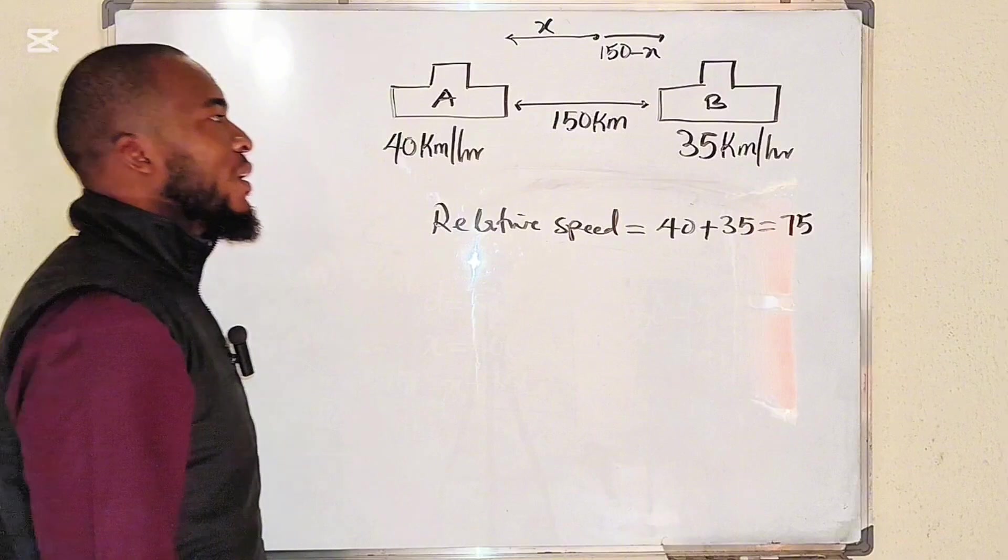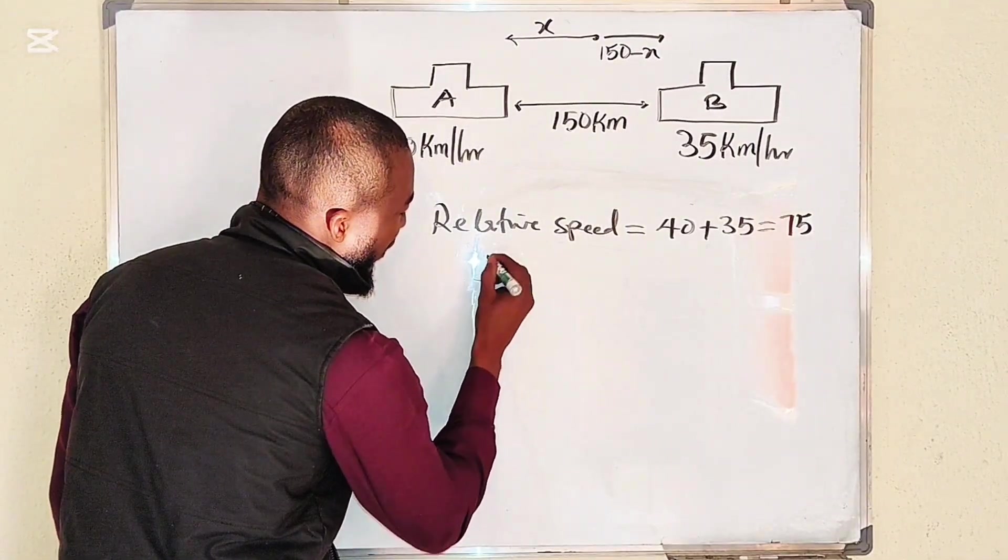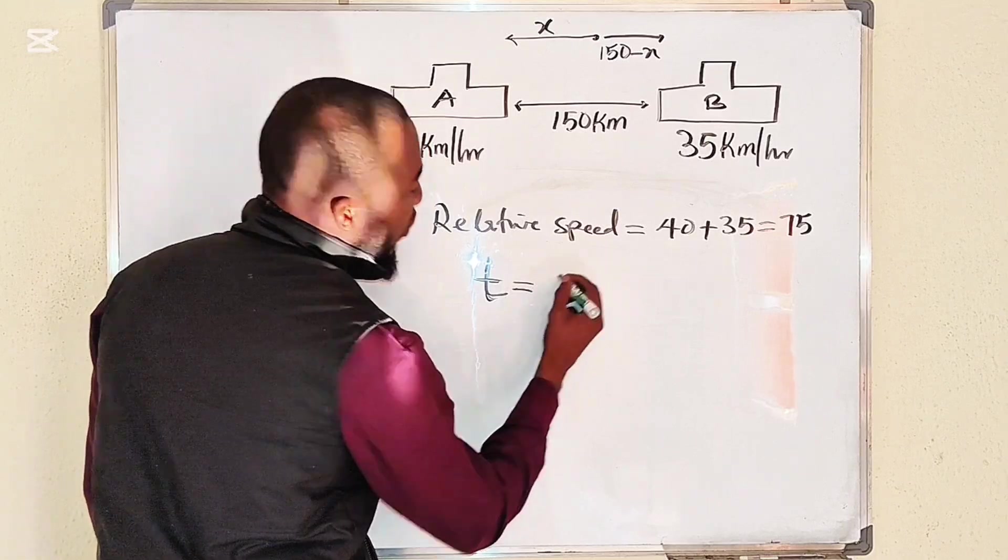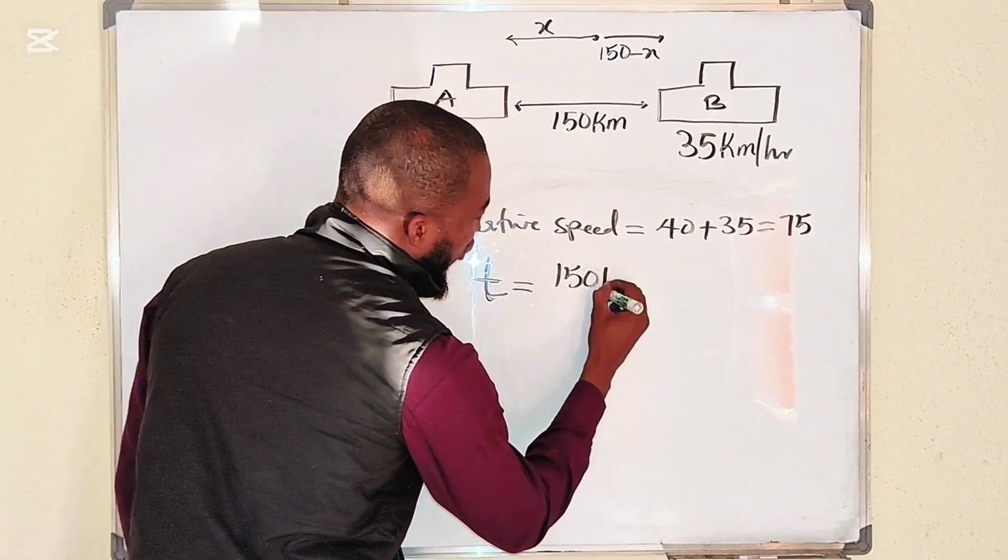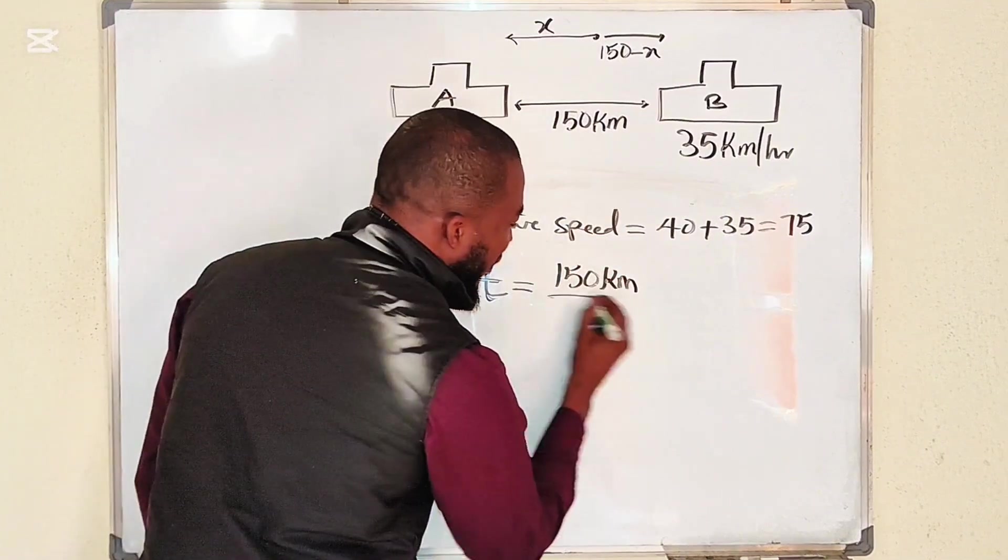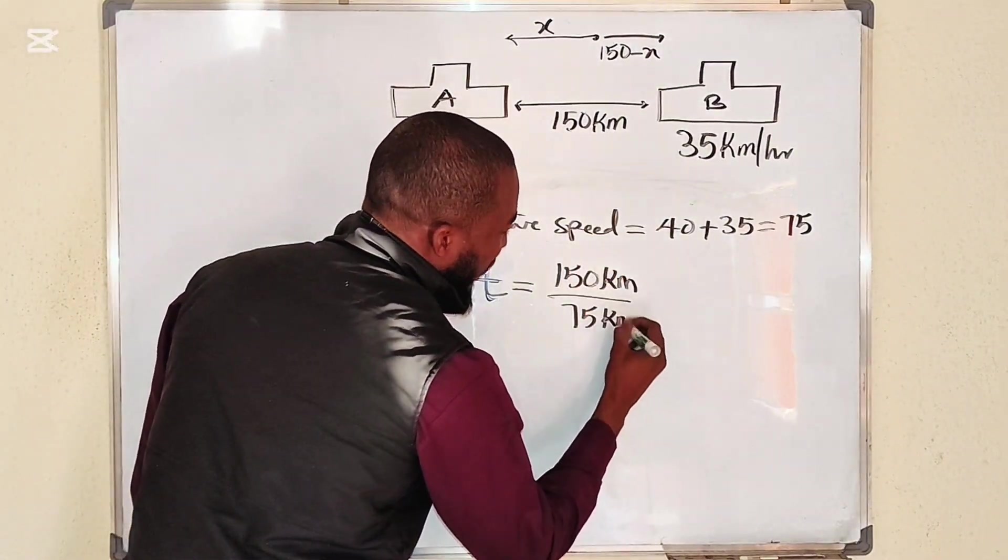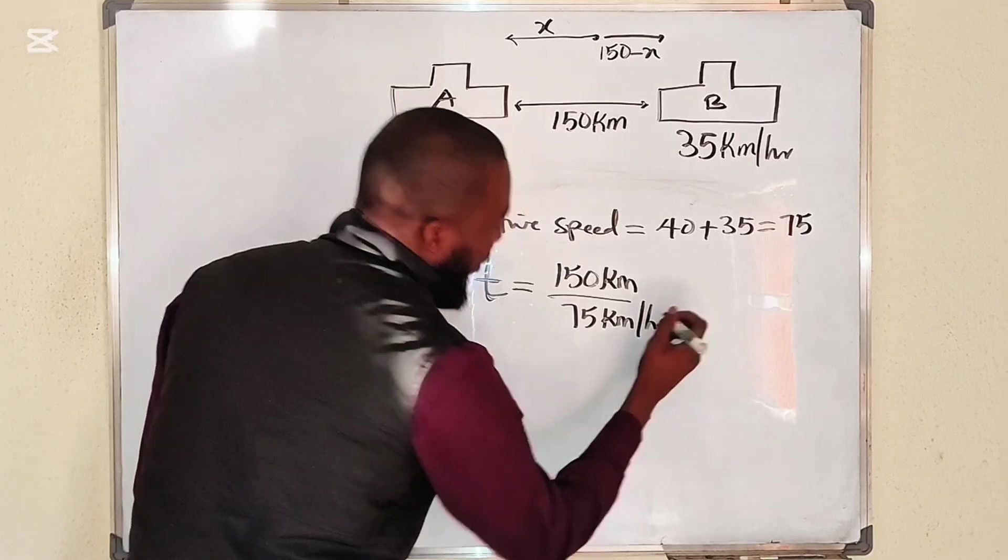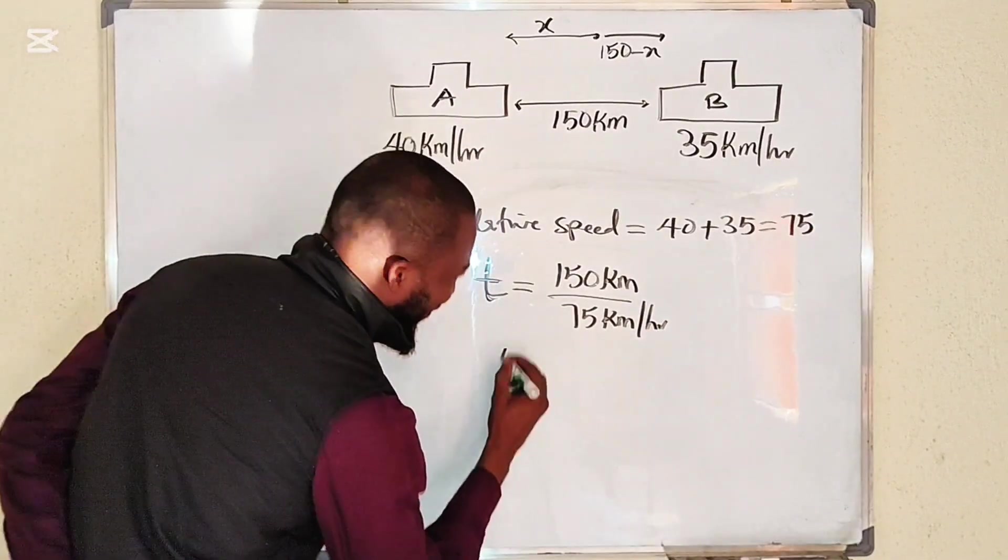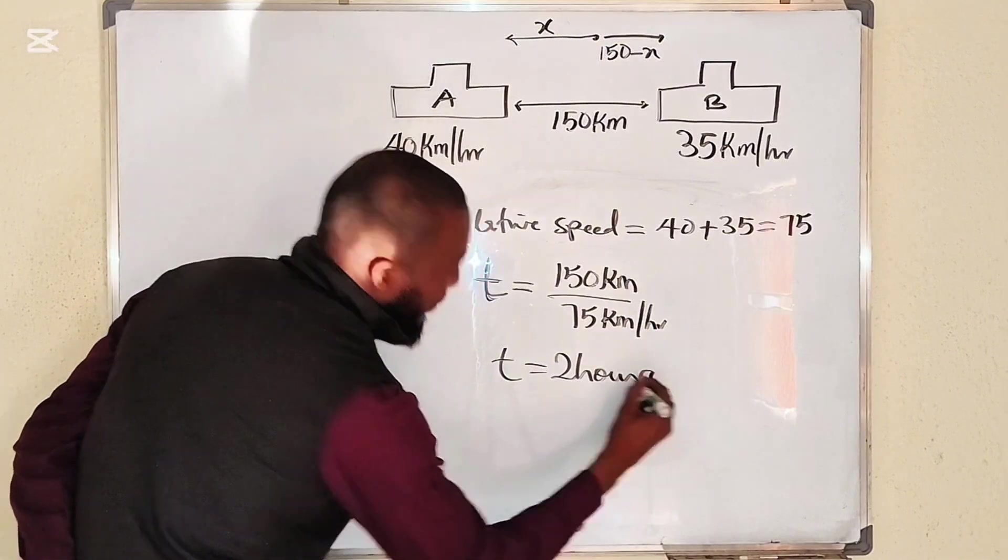Then the time taken would be equal to 150 kilometers, which is their distance apart, divided by relative speed, which is 75 km per hour. This will give us exactly 2 hours, so they are going to spend 2 hours before they meet.